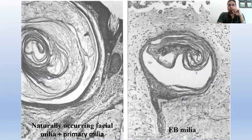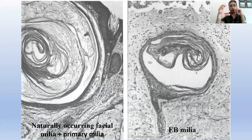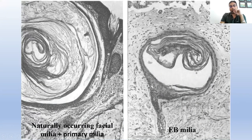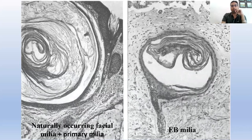They did studies on naturally occurring facial milia and EB milia, and found that naturally occurring facial milia are derived from the infundibulum — the outer root sheath of the hair follicle near the infundibulum. The infundibulum forms a small cyst which gets blocked off at the top and bottom, lying freely in the papillary dermis. EB milia, on the other hand, are derived from eccrine ducts. In the process of scarring, the eccrine duct gets cut off from the superficial epidermis and coils upon itself, forming a small cyst.